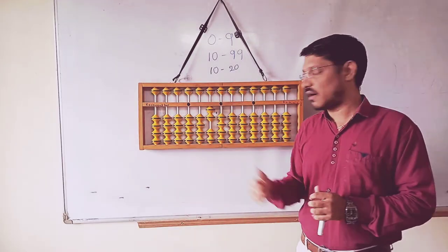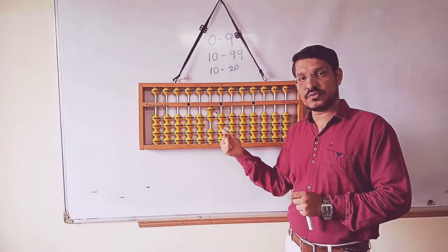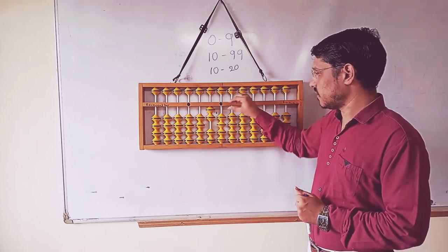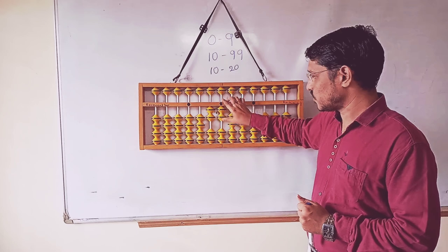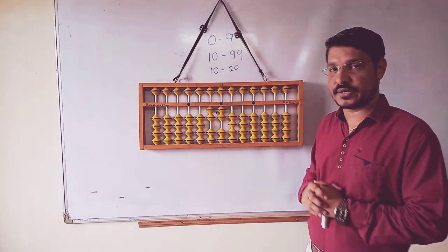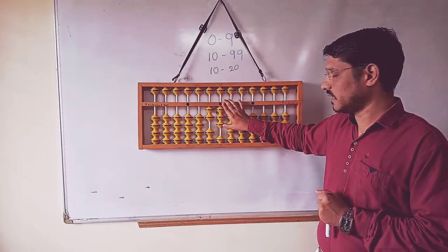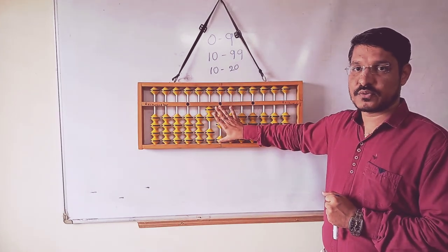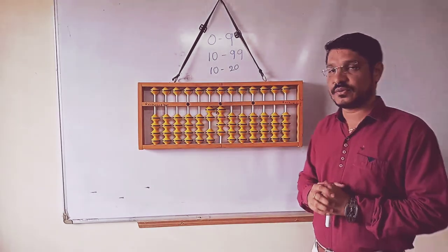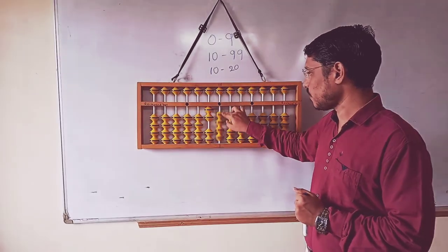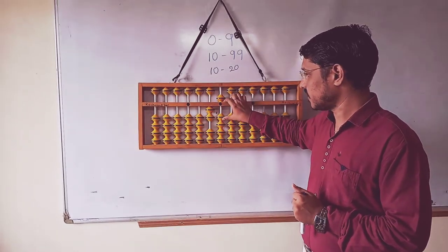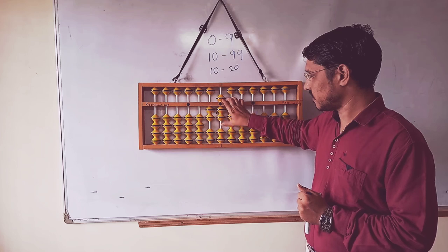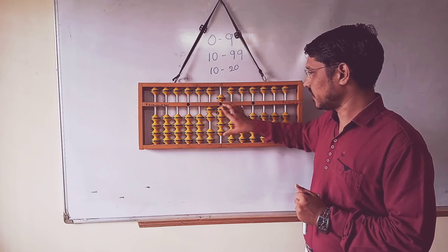Better to do the same continuum. Avoid it from 11 to 20. Here, 2, 1, 21. 2, 2, 22. 2, 3, 23. 2, 4, 24. 2, 5, 25. 26, 27, 28, 29.